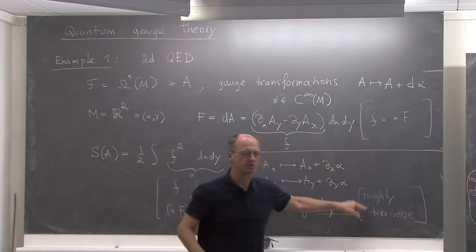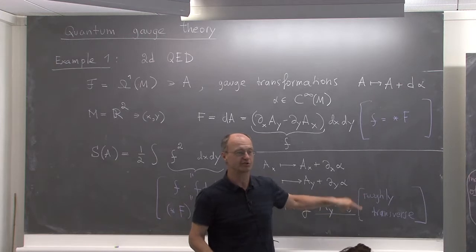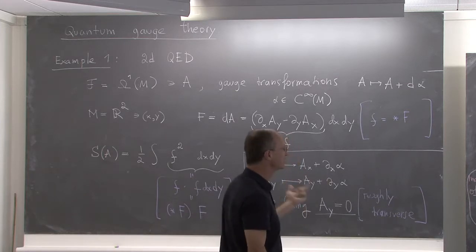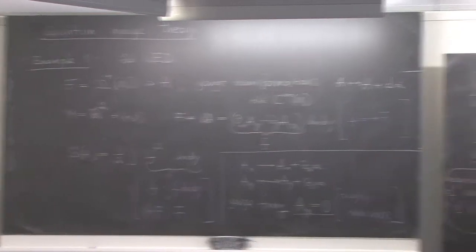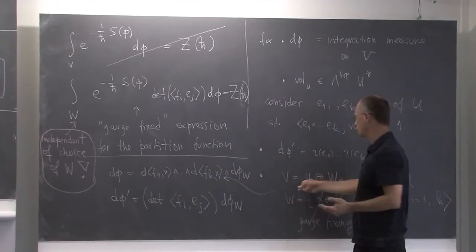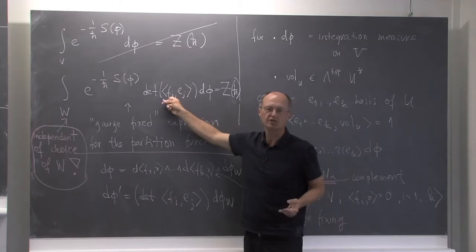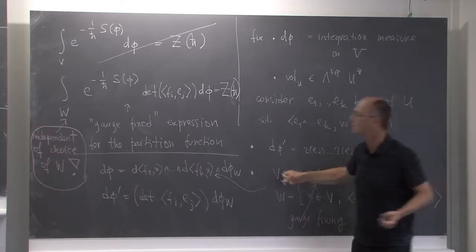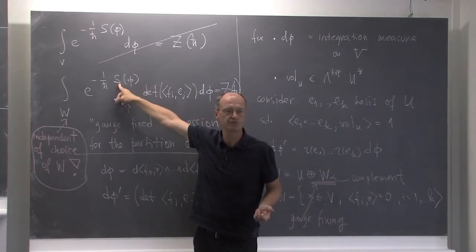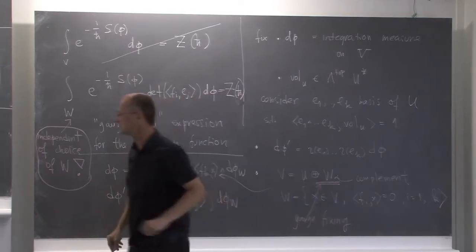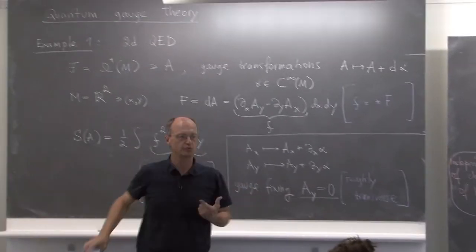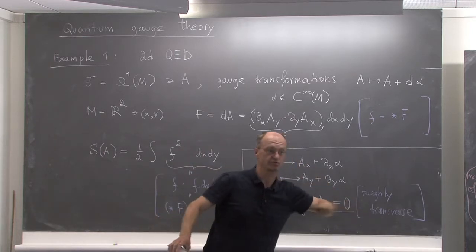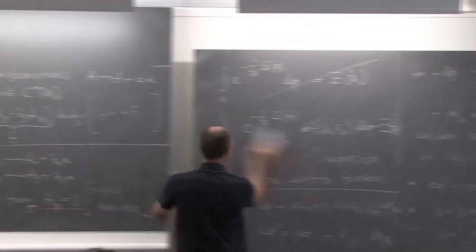Whether it intersects at exactly one point — probably not quite, because you can still choose alpha to be x-dependent. But since this is an infinite-dimensional story, let's say it's roughly transverse. The criterion for a good gauge fixing is whether the quadratic form has no kernel after you restrict to this transverse subspace.